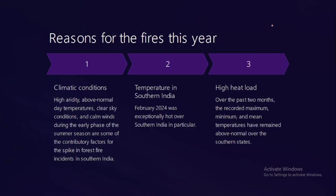Looking at the causes this year, the first is climate change — high aridity, above-normal daytime temperatures, and heat shocks have been observed, with spikes in South India. A heat wave was recorded in South India in February 2024, making it the hottest since 1901. January was the 5th warmest year in a century. Maximum and minimum temperatures have remained above normal, leading to early availability of dry biomass — when summer arrives after winter, conditions are ripe for fire.